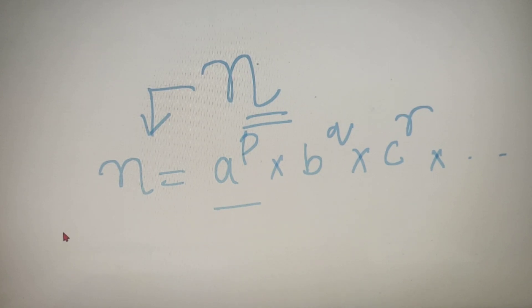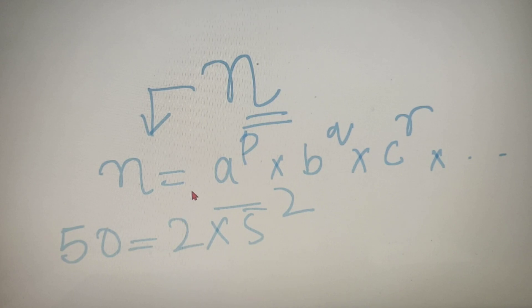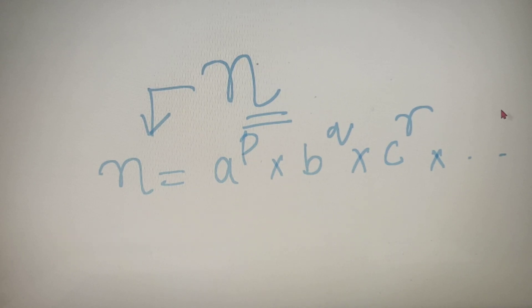For example, the prime factorization of 50 is equal to 2 to the power 1 into 5 to the power 2, where 2 and 5 are prime numbers and 1 and 2 are their respective powers.